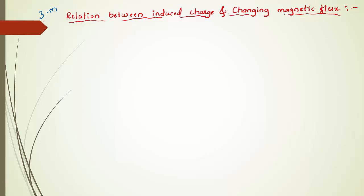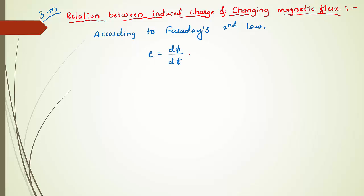Now we can derive the relation between induced charge and changing magnetic flux — this derivation carries three marks in the board examination. We directly use Faraday's second law: e = dΦ/dt, where induced EMF equals the rate of change of magnetic flux. We take this as equation number one. This gives only the magnitude; the negative sign indicating direction is given by Lenz's law.